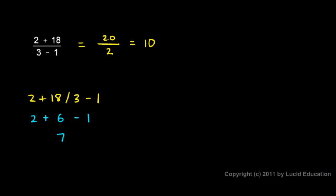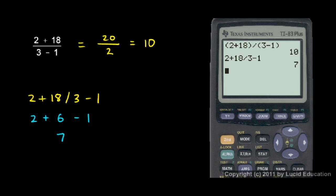And the correct answer is the 10. Again, 2 plus 18, divided by 3 minus 1, that's correctly typed there on the top line of the calculator. So make sure you use those parentheses when you need to, to group the items in the numerator and group the items in the denominator.